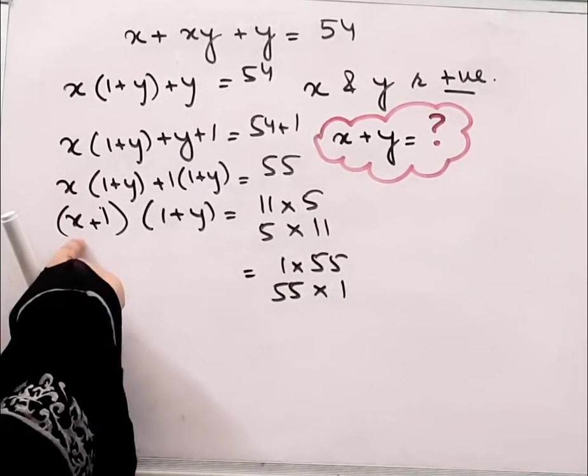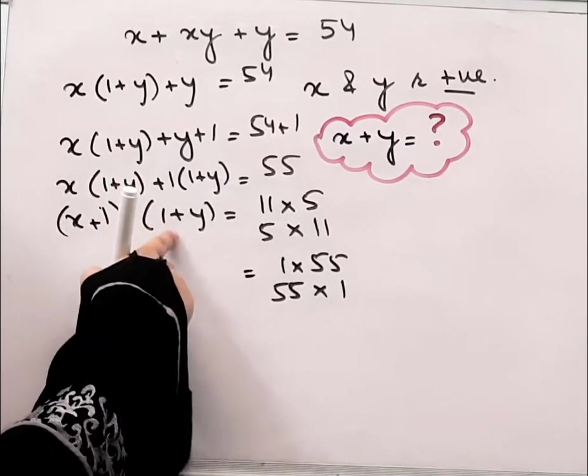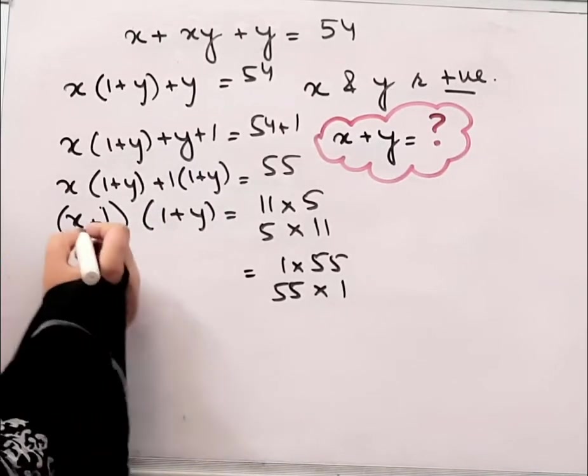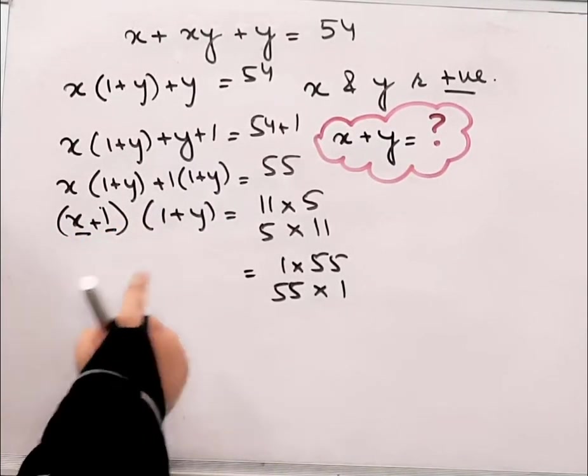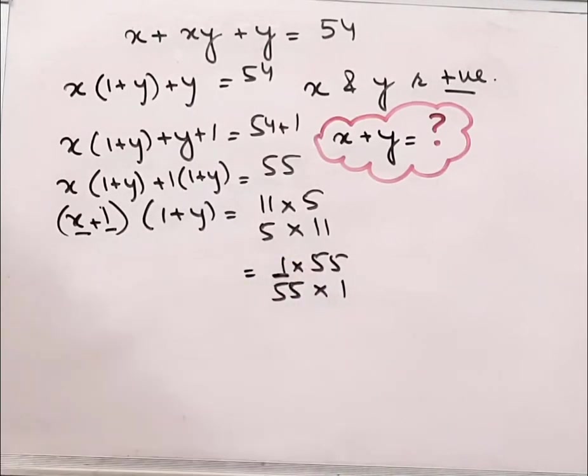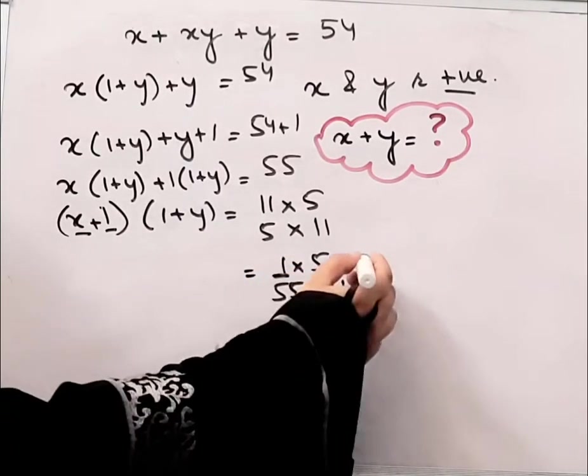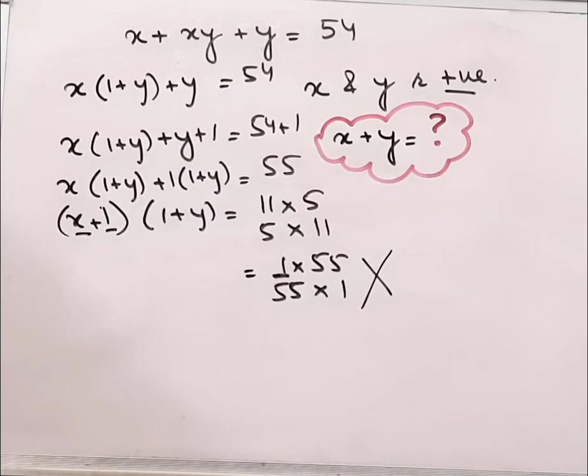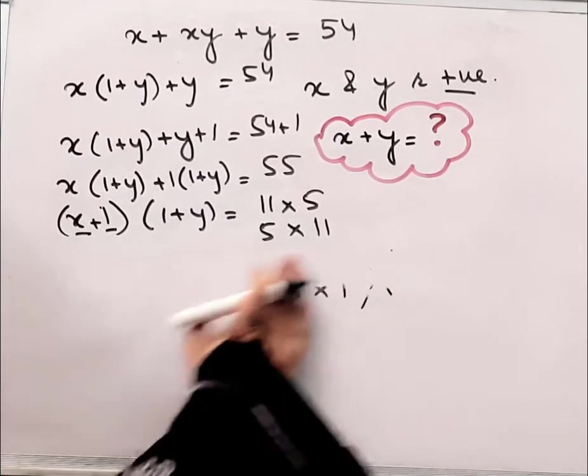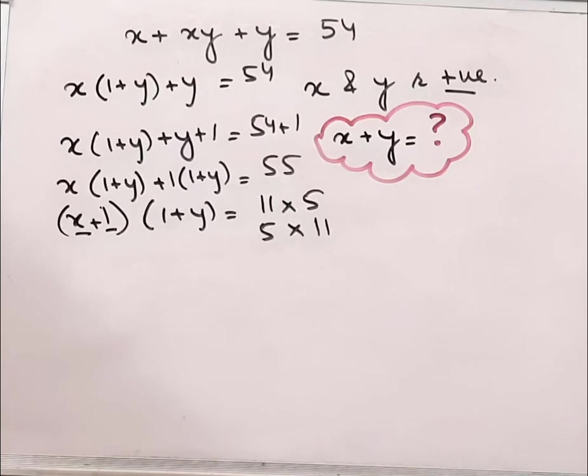What we see here is that x and y are both positive numbers, that means x plus 1 and y plus 1 should be greater than 1. So in both the 1×55 cases, they are not fulfilling this condition. We will skip these values.